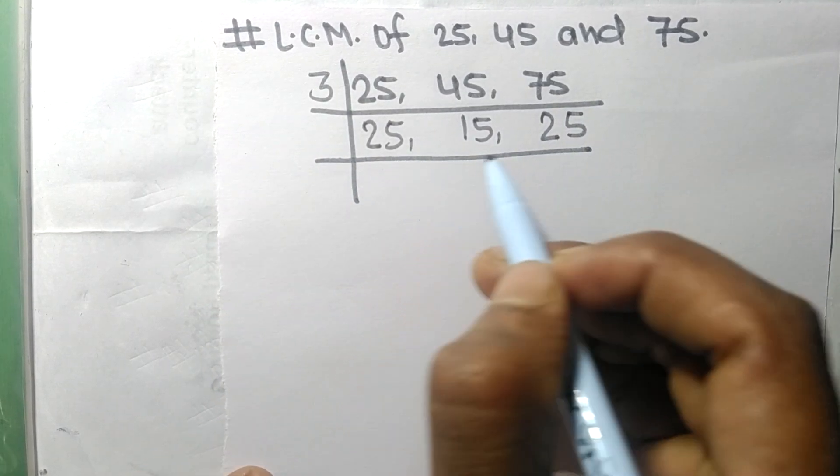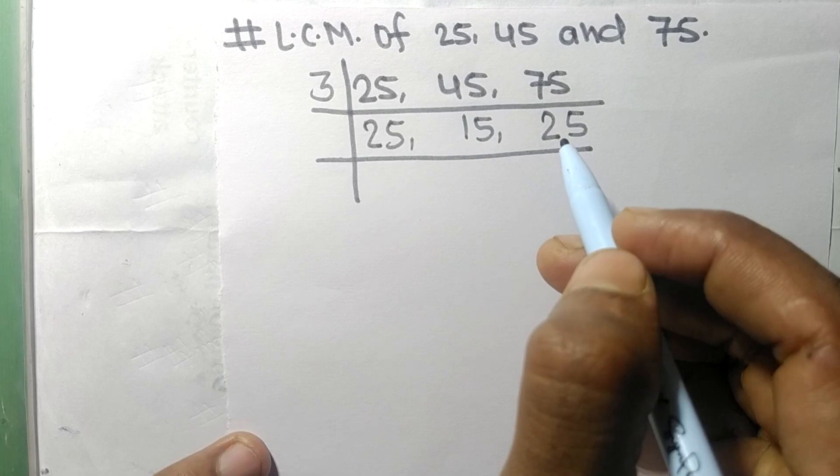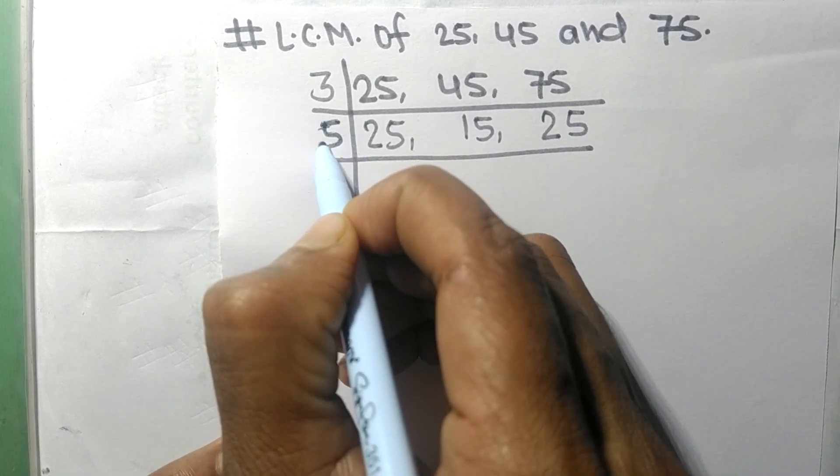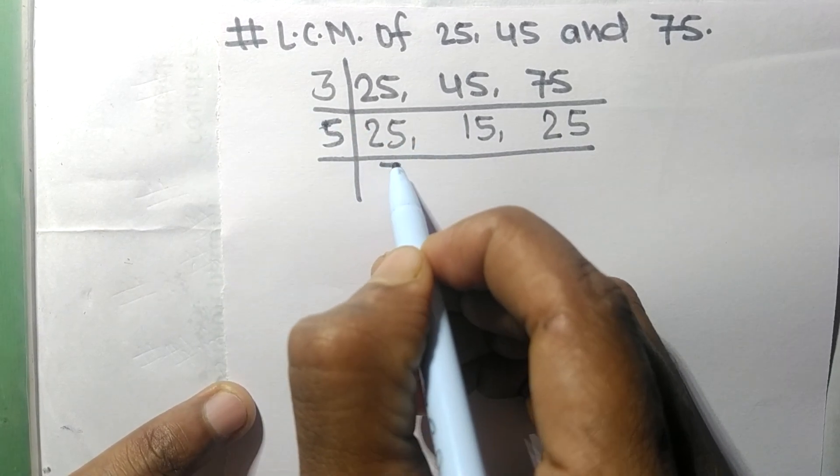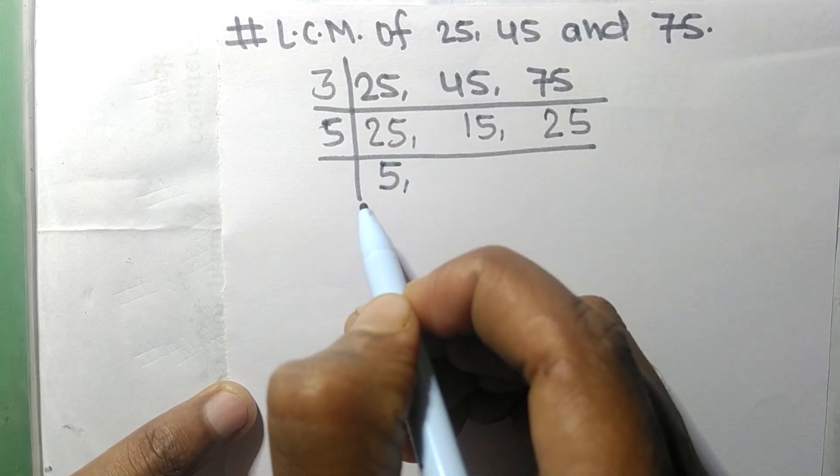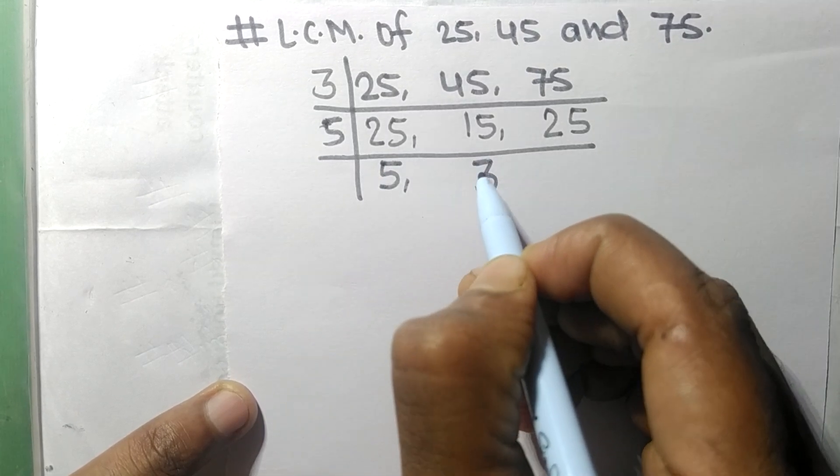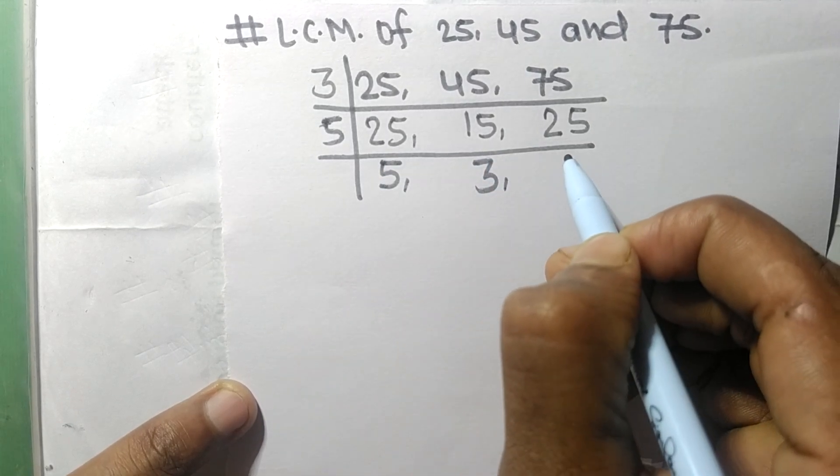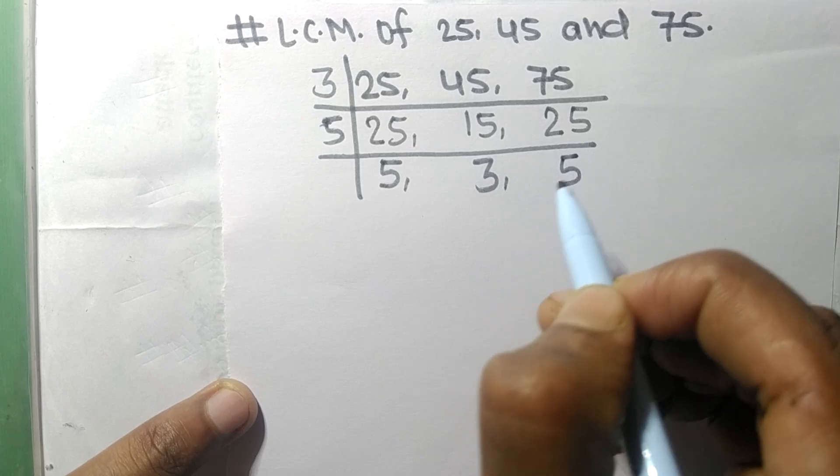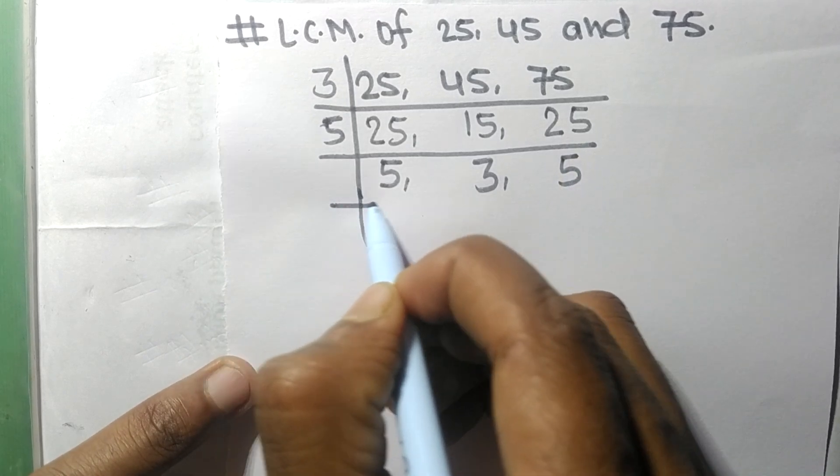Now these all numbers are exactly divisible by 5. So 5 times 5 equals 25, 5 times 3 equals 15, and 5 times 5 equals 25.